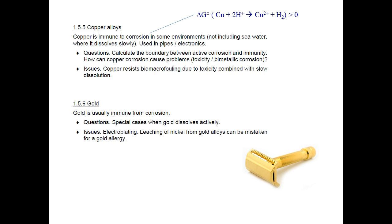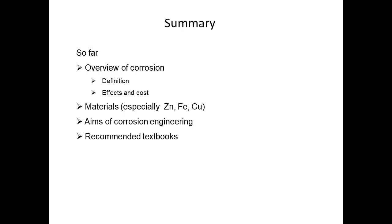So in this course I've given you a list of the important metals we're talking about and the important corrosion problems — where corrosion is going to cause cost. Now that we know what kind of subject we're talking about, in the next audio lecture we'll look at thermodynamics: the electrochemistry algebra of how to tell whether a particular metal is going to dissolve actively, be passive, or be immune from corrosion in some particular situation.